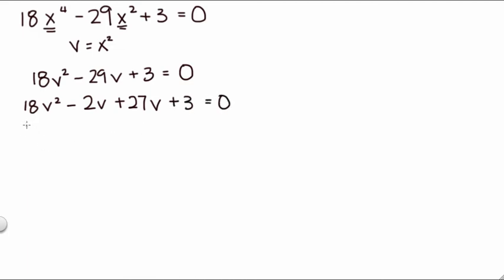So from the first two, I can factor out a 2v, so I get a 9v minus 1. And from, oh, I made a mistake. This is a negative, right? Because it has to add up to be a negative 29 and multiply to be a positive. So I can take out a negative 3. And if I do that, I'm left with a positive 9v and a negative 1 equals 0.